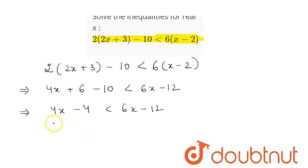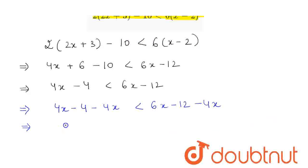Now, we will bring the variables to one side and the constants to the other. If we subtract 4x from both sides, we get 4x - 4 - 4x < 6x - 12 - 4x. This gives us -4 < 2x - 12, as 4x and -4x cancel each other.